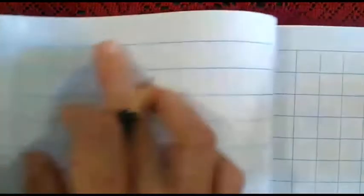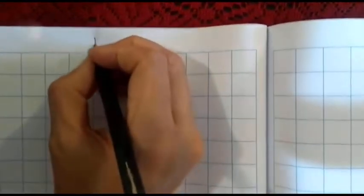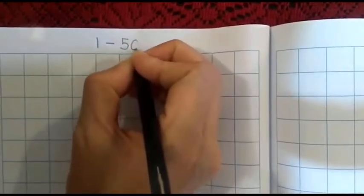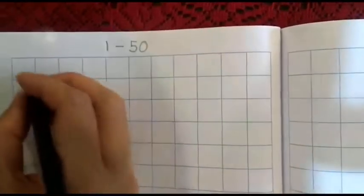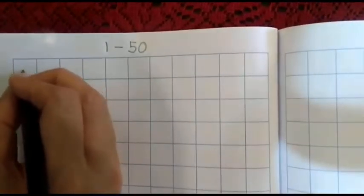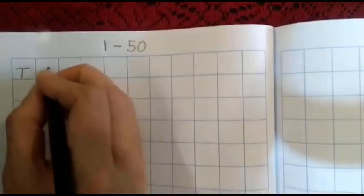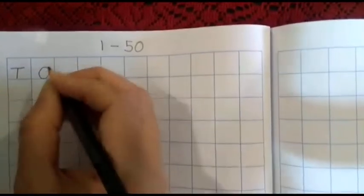Please write today's date and then here we are going to write 1 dash 50, 1 to 50. Then we will start writing in the corner box, we are going to write capital T and capital O in the next box.